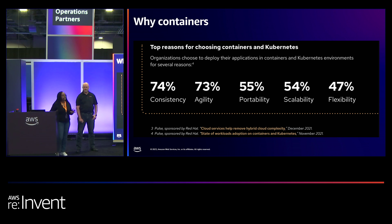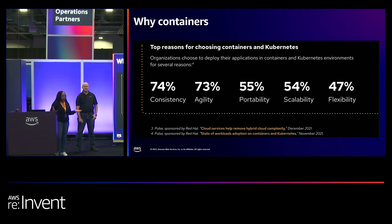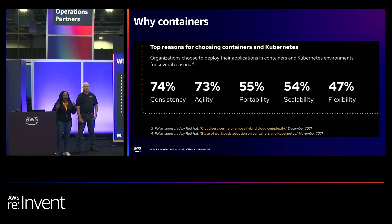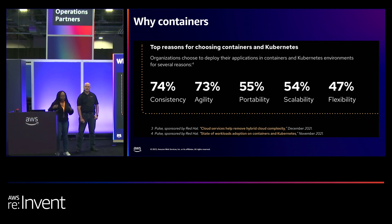Additionally, customers can scale horizontally based on different workload types with containers. Orchestration solutions like Kubernetes automate deployment and management of containers to scale up or down on demand.